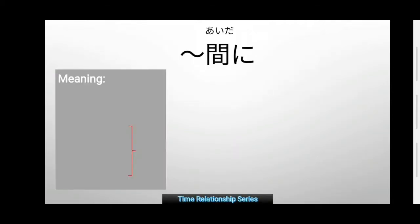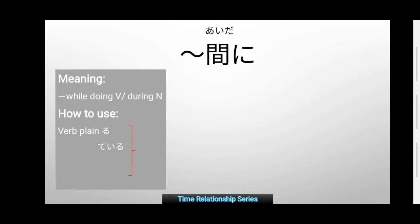Nani Aida ni — meaning: while doing [verb] or during [noun]. How to use it? Verb plain ru, te-iru (present progressive), and nai for negative. For nouns, we just add the particle 'no' after the noun, then plus Aida ni.